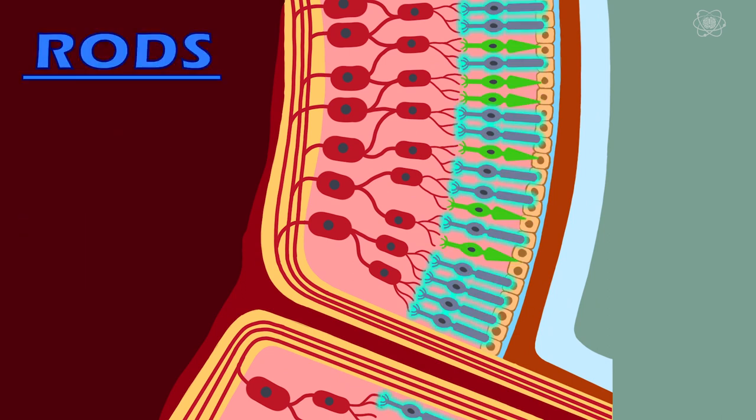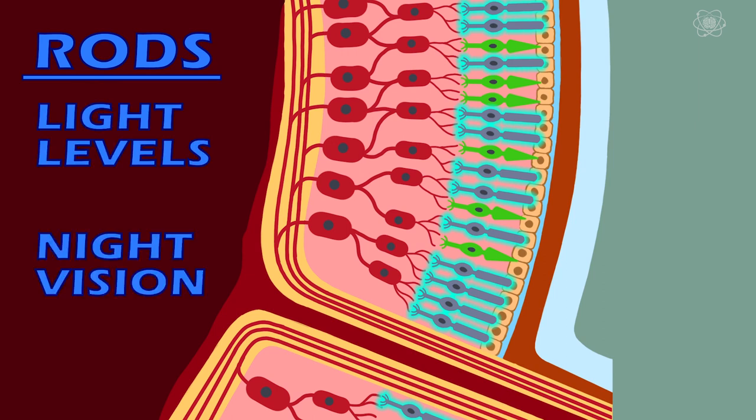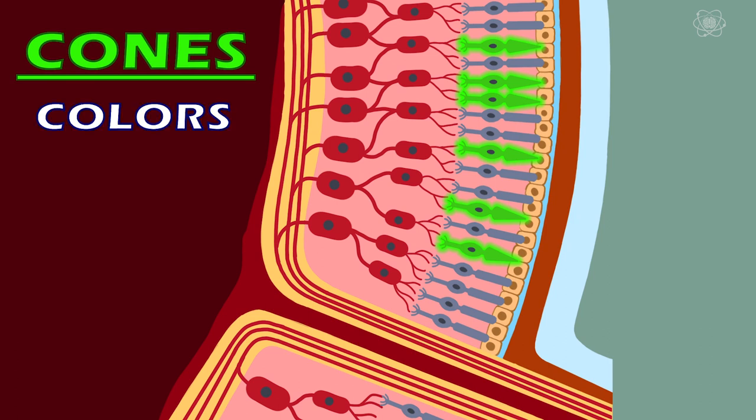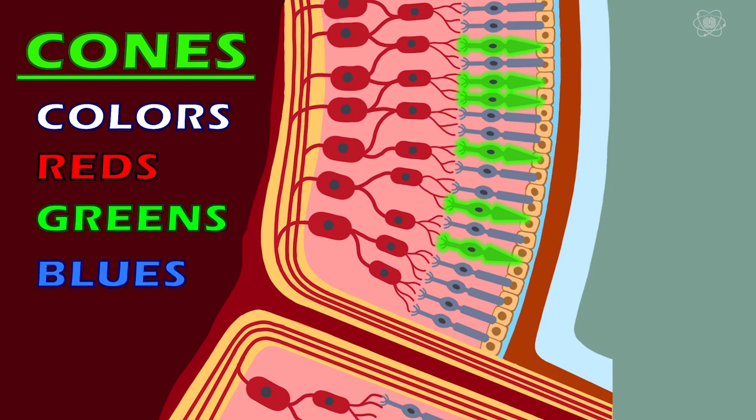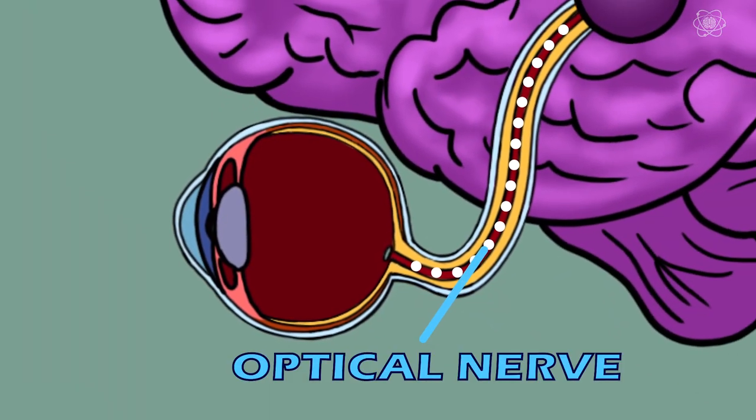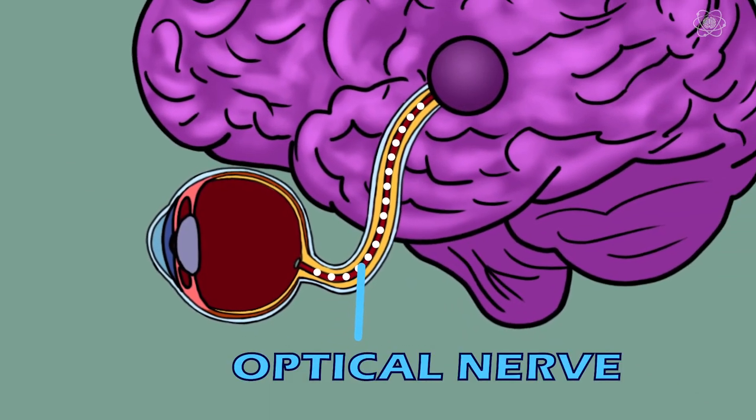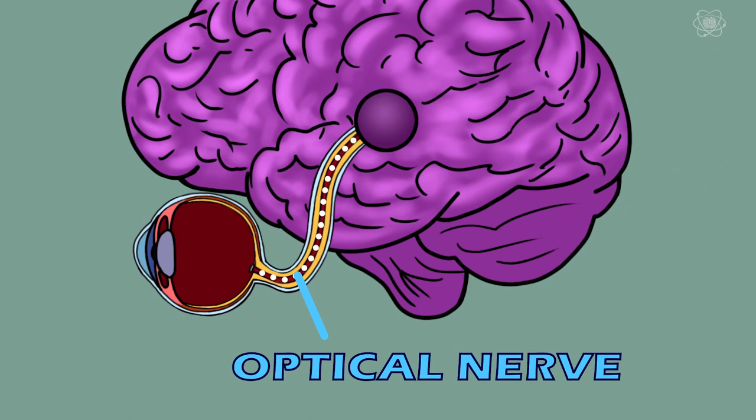The rods are responsible for detecting different levels of light. They're also responsible for vision at nighttime. While the cones, they're responsible for detecting the colors, the reds, the greens, and blues, and different combinations. Both the rods and the cones work together to send signals down the optical nerve and up to the brain, where the brain deciphers those signals to see what we're looking at.